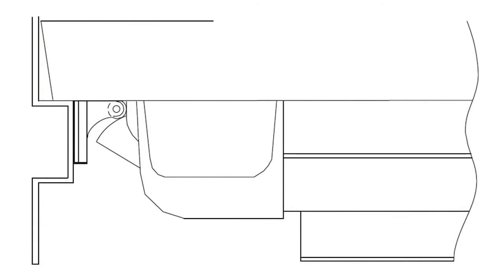If the latch doesn't fully engage, the strike can be moved closer to, or further away from, the door stop. If the door can be opened from the outside, a shim may be used under the strike.